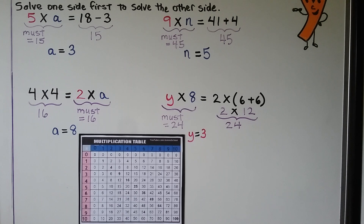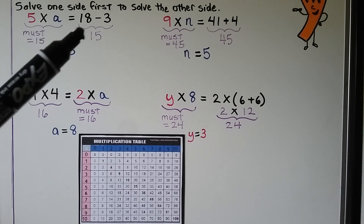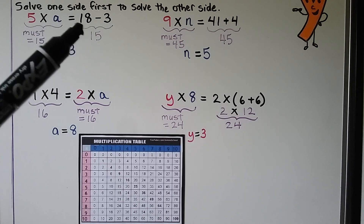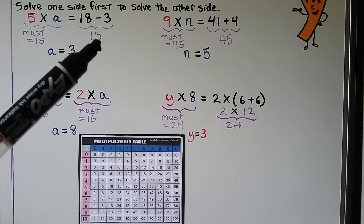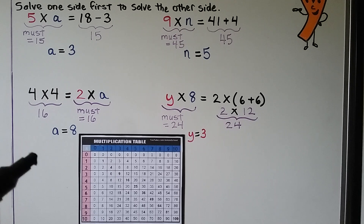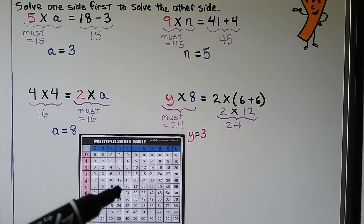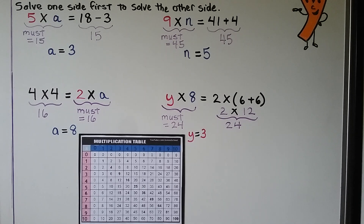We solve one side first to solve the other side. We have 5 times a is equal to 18 minus 3. We do 18 minus 3, which equals 15, so this side must be equal to 15. Since 5 times 3 is equal to 15, a must be equal to 3.